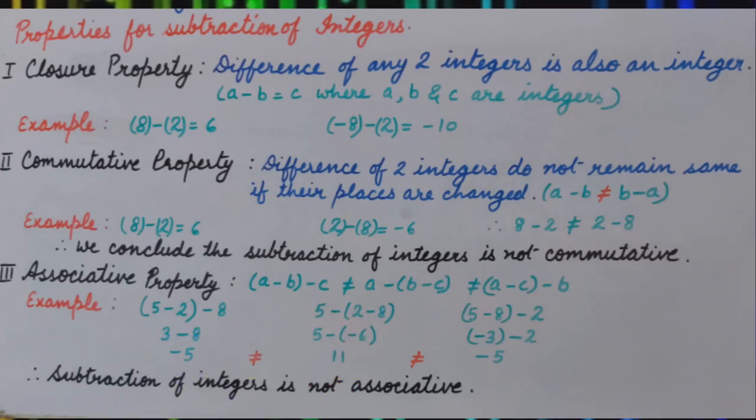And so if we make another group, that is 5 minus 8 we are solving first, we are getting minus 3. And when we subtract 2 from minus 3, we get minus 5. So subtraction of integers is not associative.